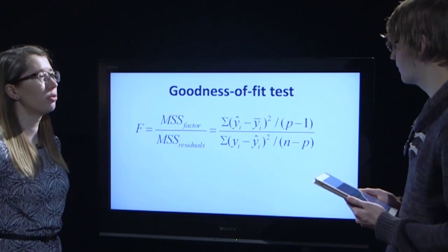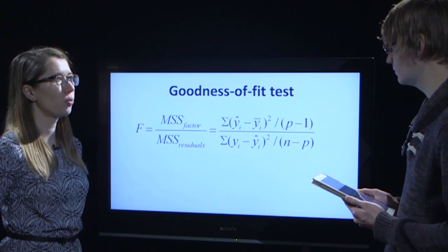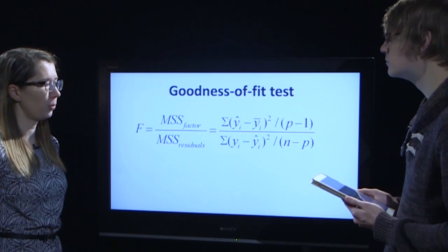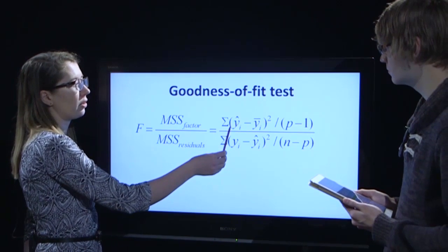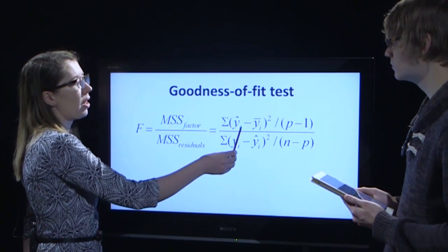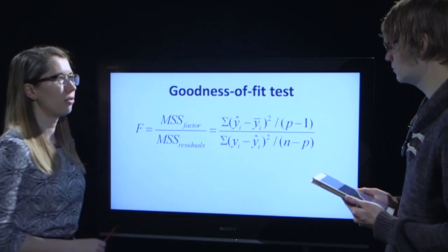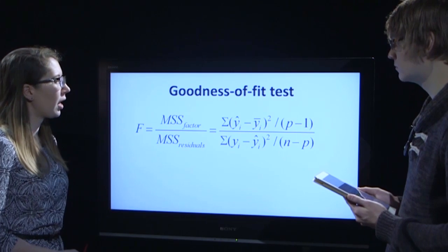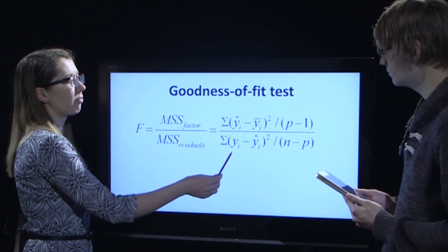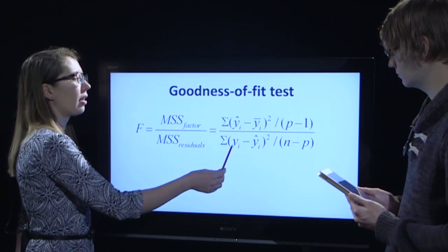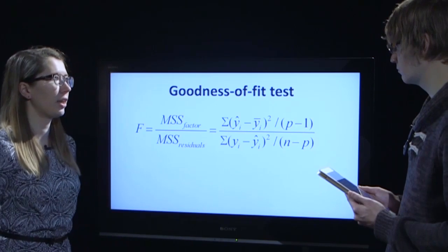For example, the goodness of fit test, which compares the mean sum of squares due to the factors of the model we have chosen, expressed as the difference between the signal calculated according to the calibration function minus the average signal on a corresponding concentration level. And also the mean sum of squares due to the residuals, which are again the experimental signal minus the signal calculated using the calibration function.